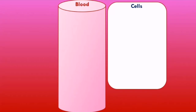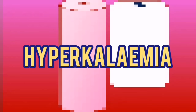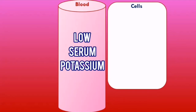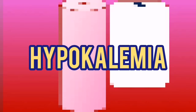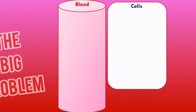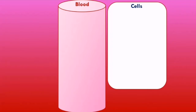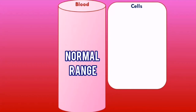It is also important to regulate the serum potassium levels. High serum potassium levels is called hyperkalemia; low serum potassium levels is called hypokalemia. The big problem with both hyperkalemia and hypokalemia is that they can cause dangerous cardiac arrhythmias. So it's very important to maintain serum potassium levels within the normal range, which is generally between 3.5 and 5.5 millimoles per liter.